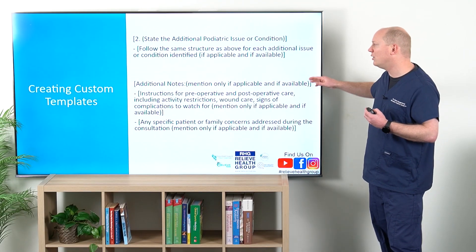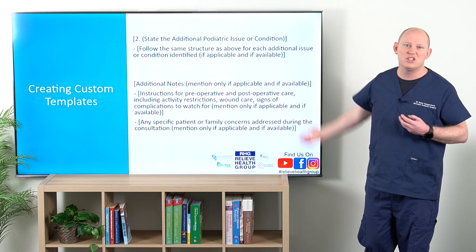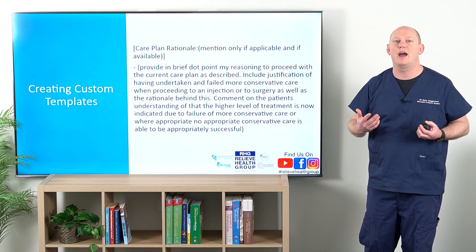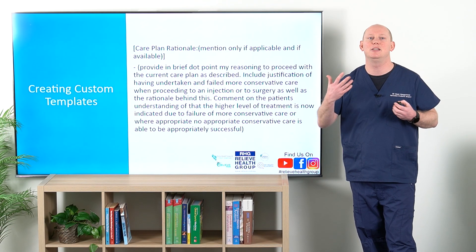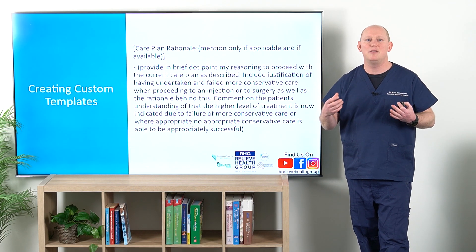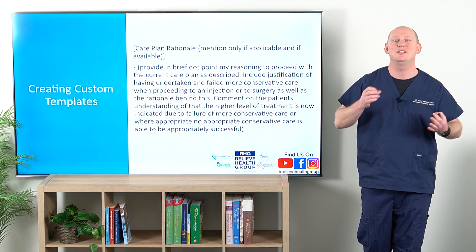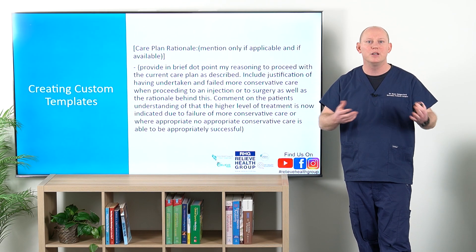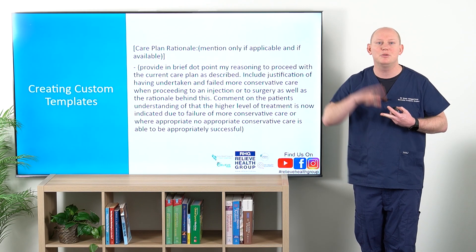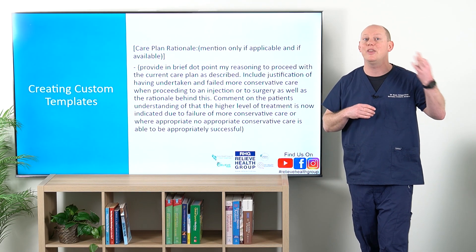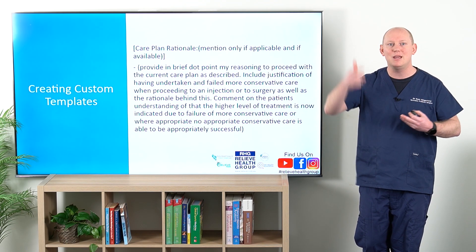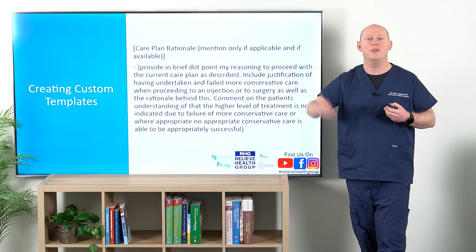We do want any additional notes, any instructions — which is a really good way to capture that. The care plan rationale is a really important thing that I've added more recently. I want a dot-pointed reasoning to proceed with the current care plan and justify it — this brings everything we've done prior together. Basically I get something about half the size of this: one or two sentences saying there's an ingrown toenail that's mild, the patient is advised they would like to proceed with conservative knowing the risks, the recovery, and knowing that a procedure is available but they're not wishing to undertake that at this stage. I find that this final paragraph really ties everything together.